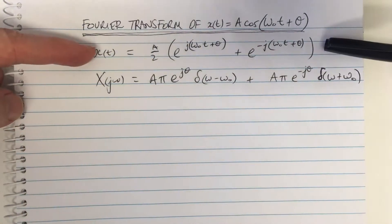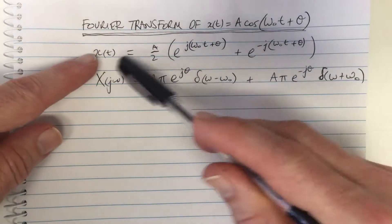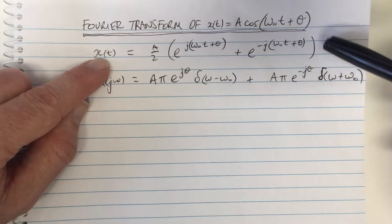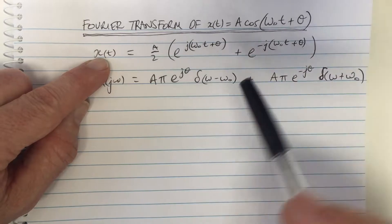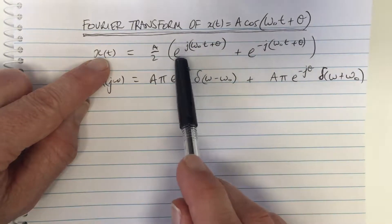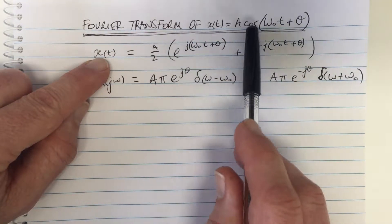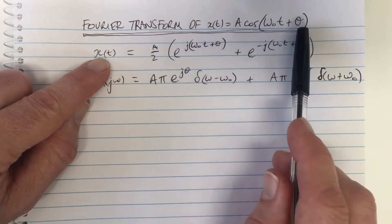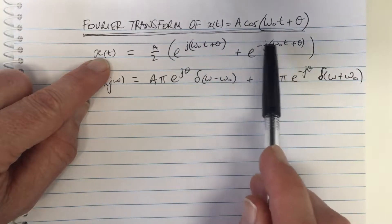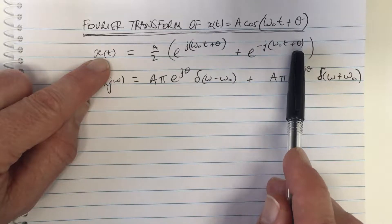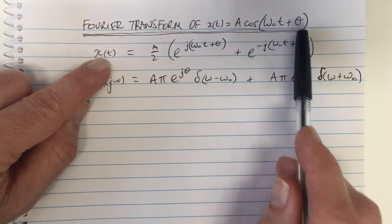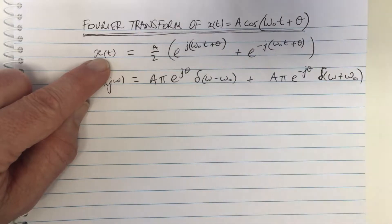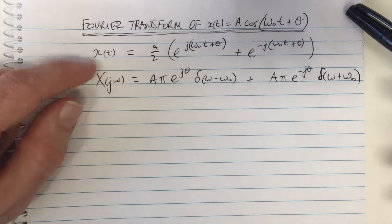Let's think about the intermediate step. All I've done here is to write out the equation — the different form of the cosine function in terms of the complex exponentials. Cosine, as we know, is half of e to the j of whatever the argument is, plus e to the negative j of the argument. Here the argument is omega_0*t plus theta. And we match up these two terms here, and that is what happens in the Fourier transform.